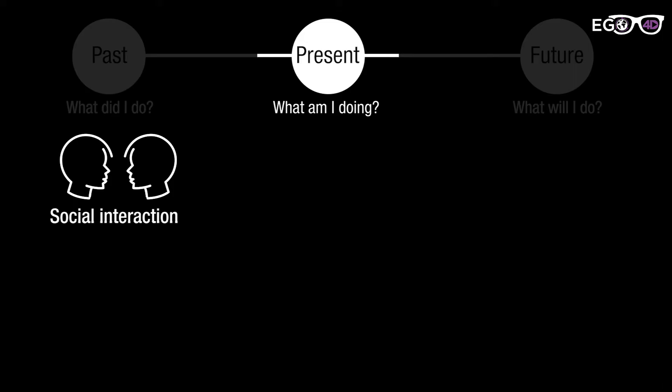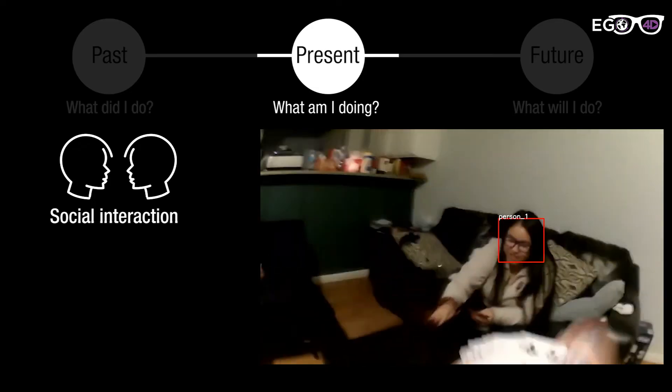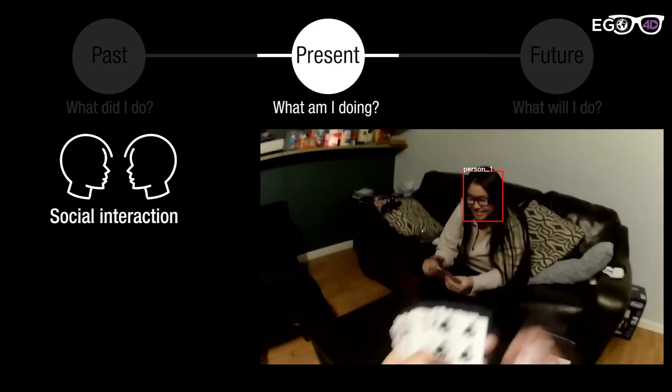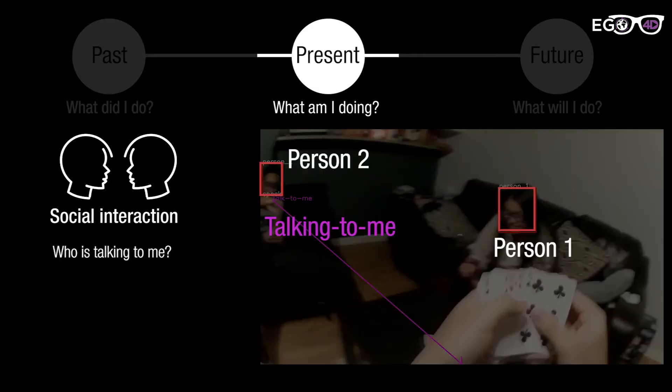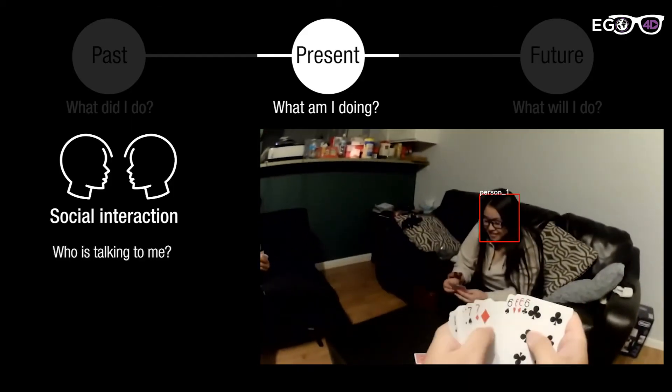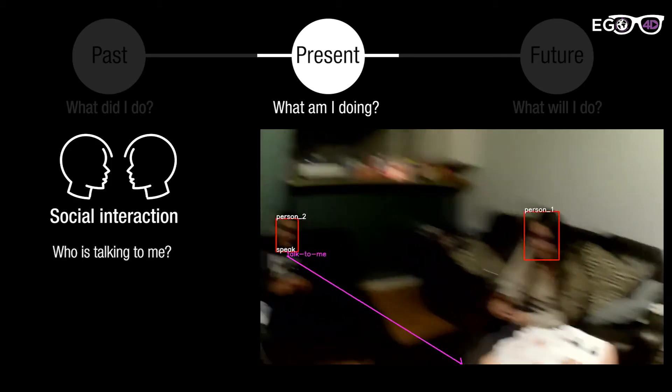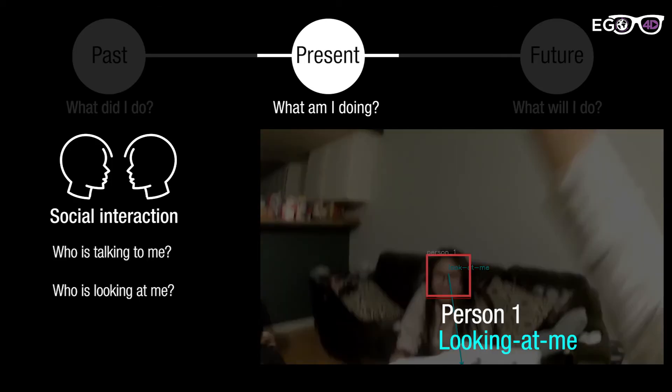Social benchmark task focuses on interactions between social members. For example, an algorithm is expected to detect the social member who was talking to the camera wearer and detect one who was looking at the camera wearer.